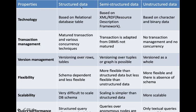Based on technology, structured data uses relational database tables. Semi-structured is based on XML or RDF (Resource Description Framework). Unstructured is based on character and binary data — various file formats. Regarding transaction management, structured data has mature transaction support with concurrency techniques. For semi-structured, transaction is adapted from databases but not as mature. For unstructured data there is no transaction management and no concurrency at all — for example, a PDF may be accessed by many people simultaneously.